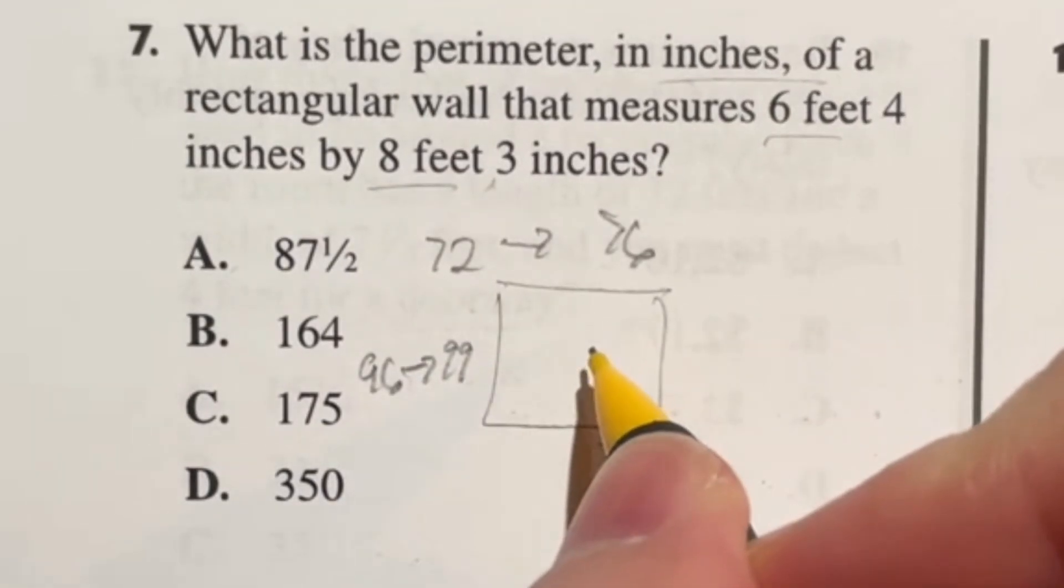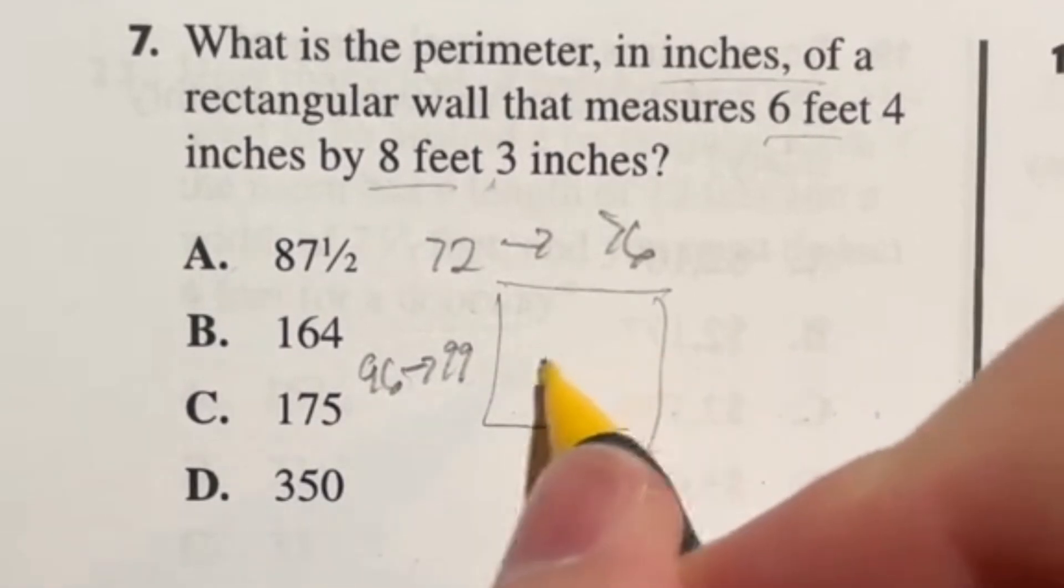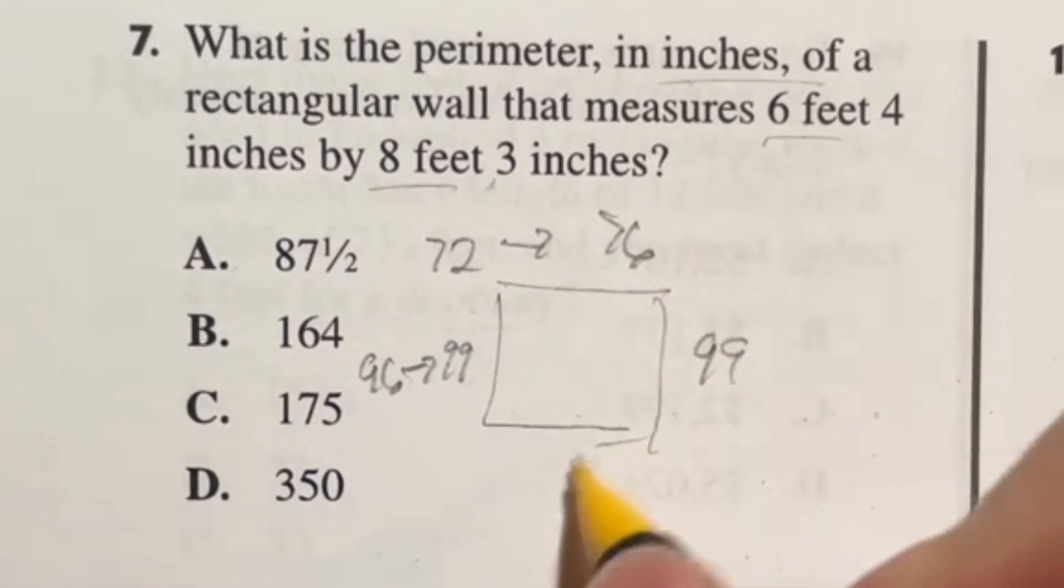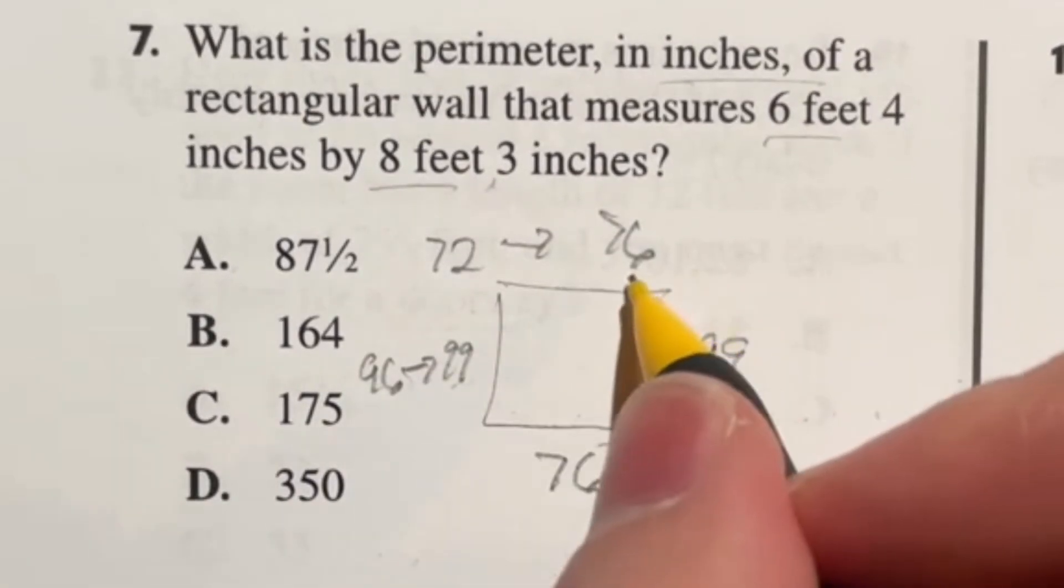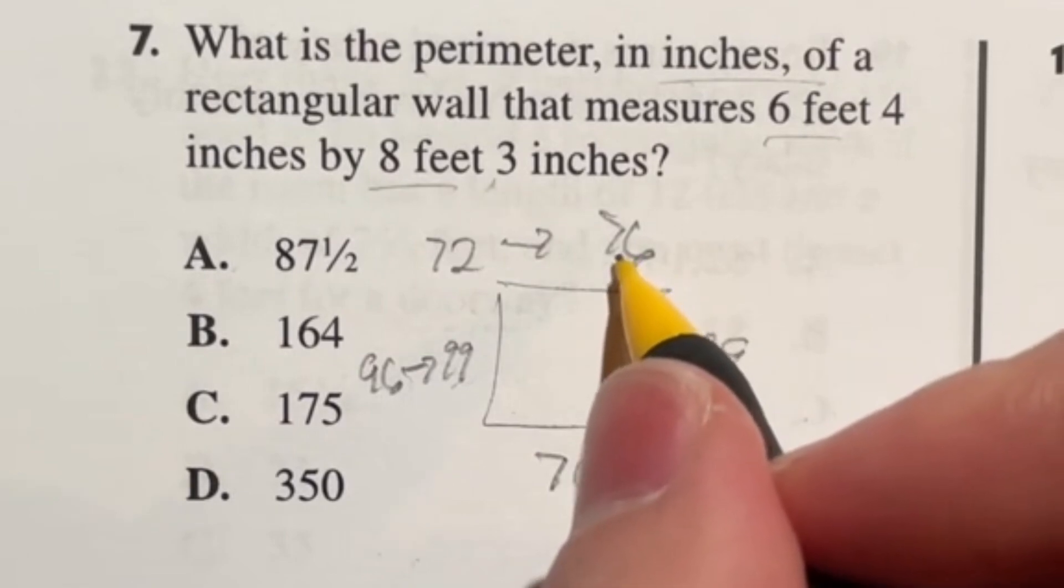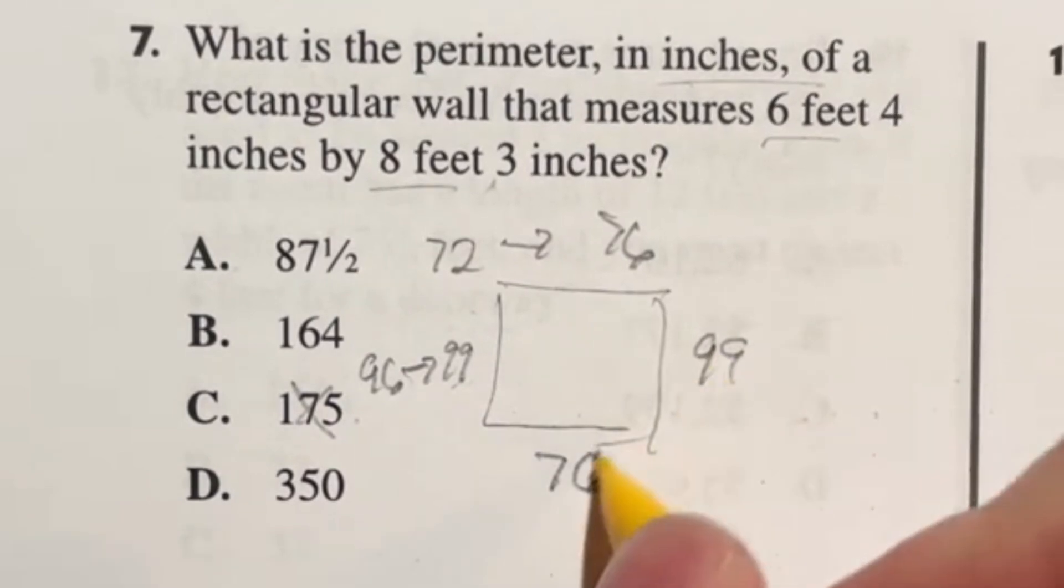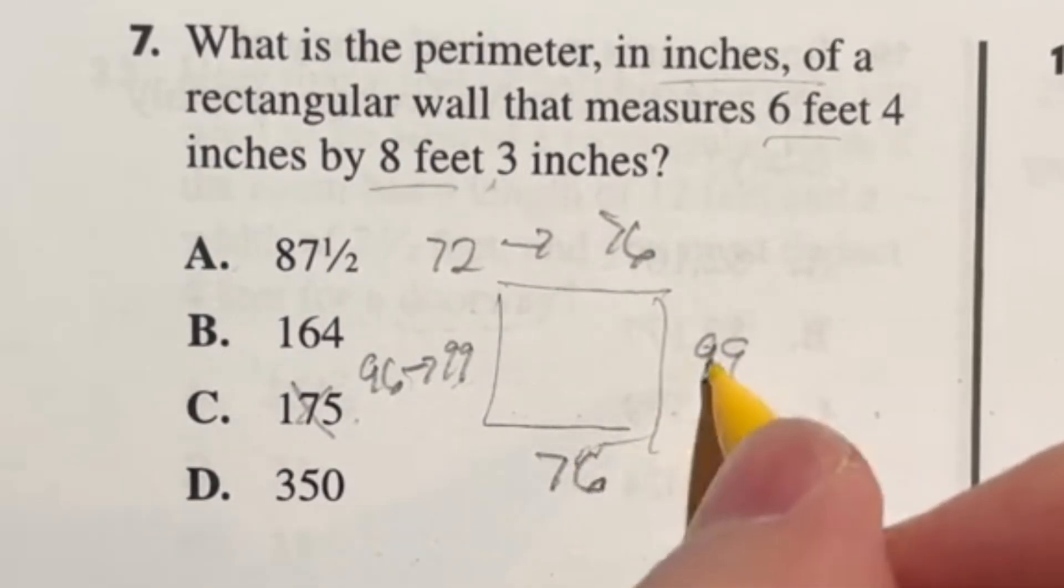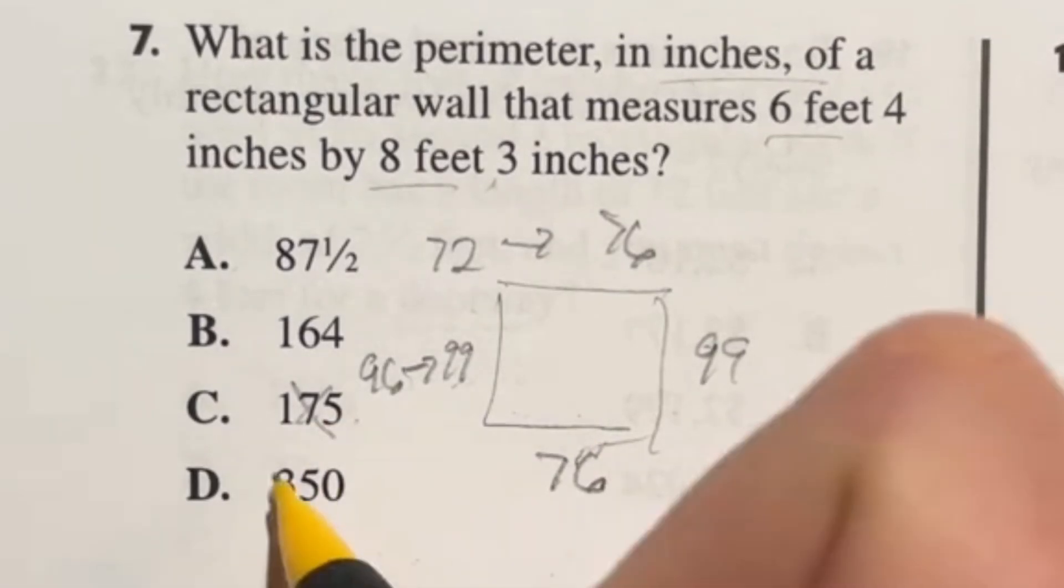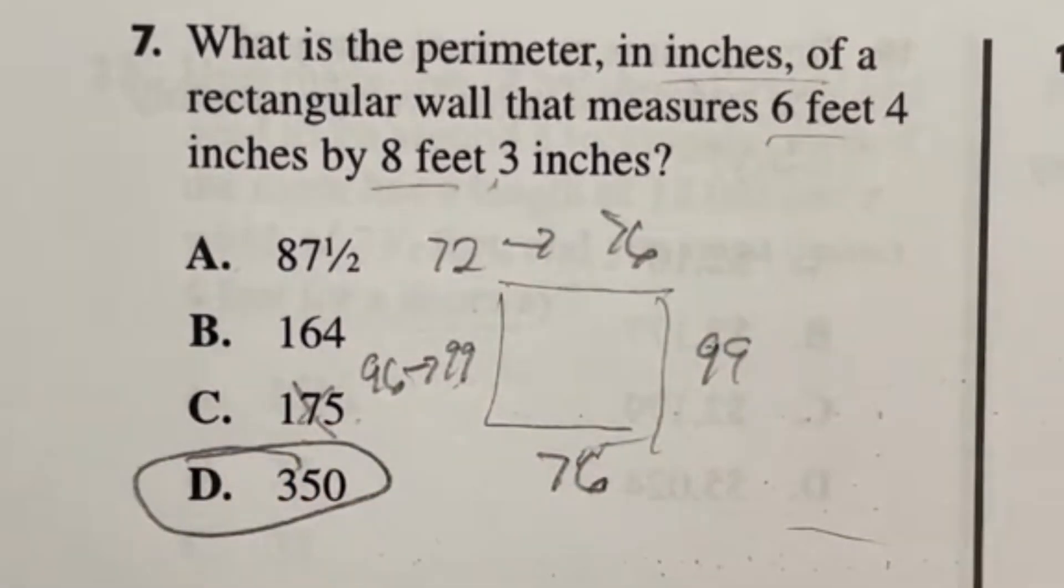Now when you're doing perimeter, you're going to add up all four sides. We have a 99 over here and a 76 over here. If you do just 99 plus 76, that's going to give you 175, which will be the wrong answer because you forgot the other two. So then add those in, doubling this, and it's going to give you a final answer of 350, answer D.